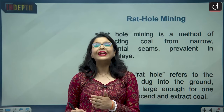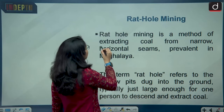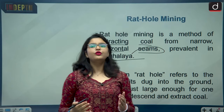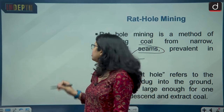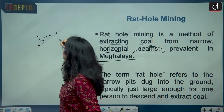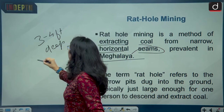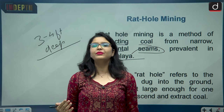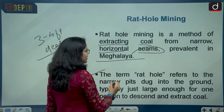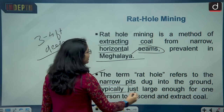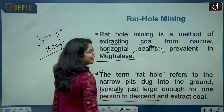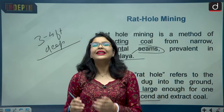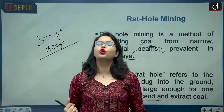Rat hole mining is a method of extracting coal from narrow horizontal seams prevalent in the state of Meghalaya. Workers dig a narrow pit, usually three to four feet deep, through which they are able to reach the coal seams and extract coal. The term 'rat hole' refers to these narrow pits dug into the ground, typically just large enough for one person to descend and extract coal. Women, children, and workers are employed to go inside these pits.